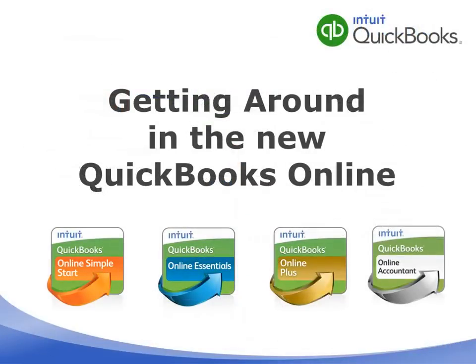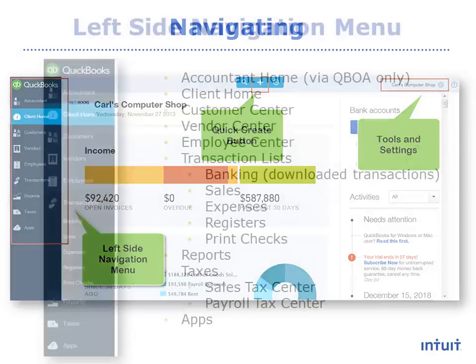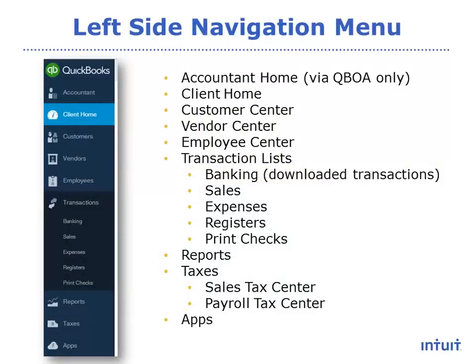Now let's look at how you can get around in the new QuickBooks Online. There are three main navigation areas: the left side navigation menu, the Tools and Settings button, and the Quick Create button. You will also use browser navigation like the back and forward history buttons. The left side navigation menu is where you can access the various centers and transaction lists. It's designed to optimize space, as most monitors are now wider than they are tall. The navigation has been streamlined so there are fewer clicks needed. There are really only two options that have an additional level: the Transactions menu and the Taxes menu.